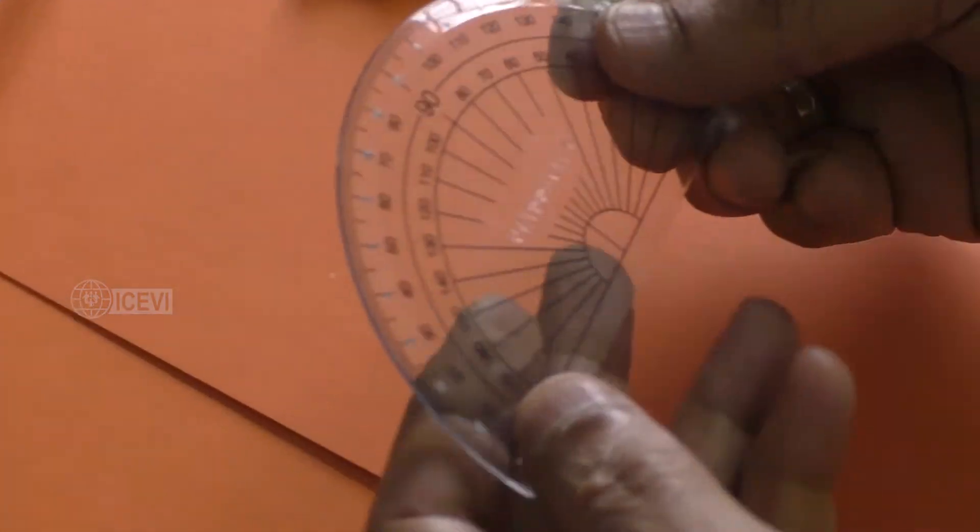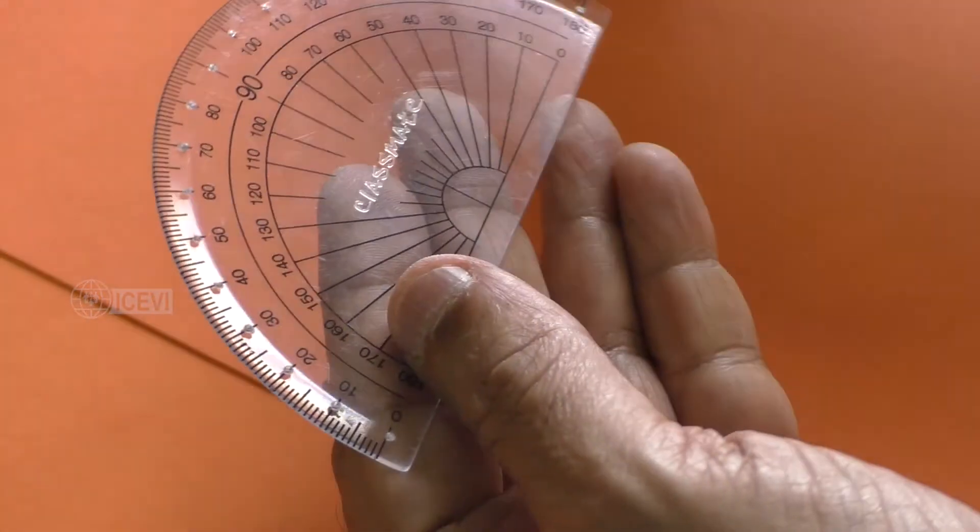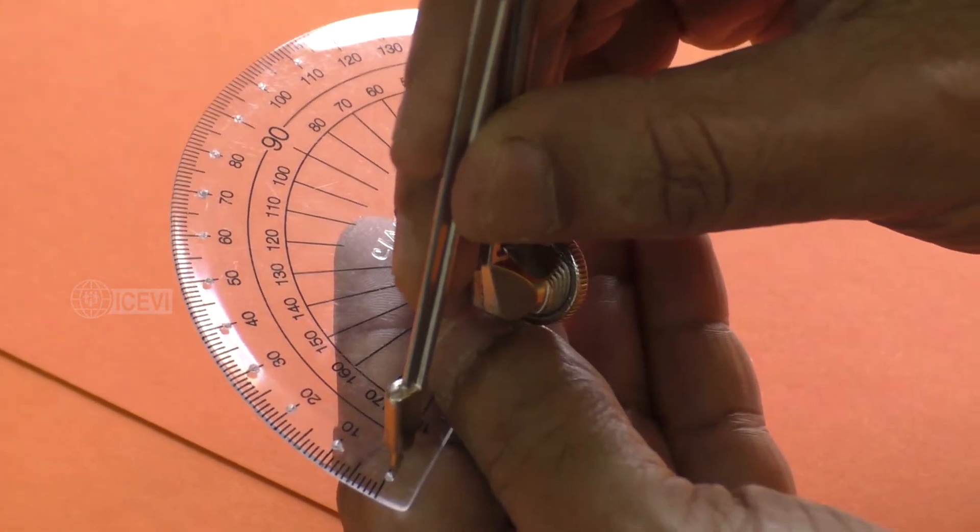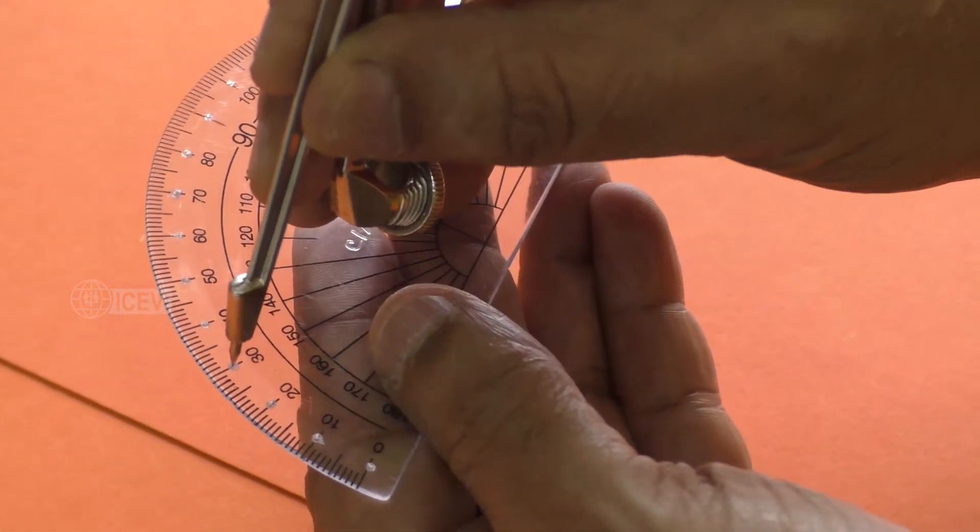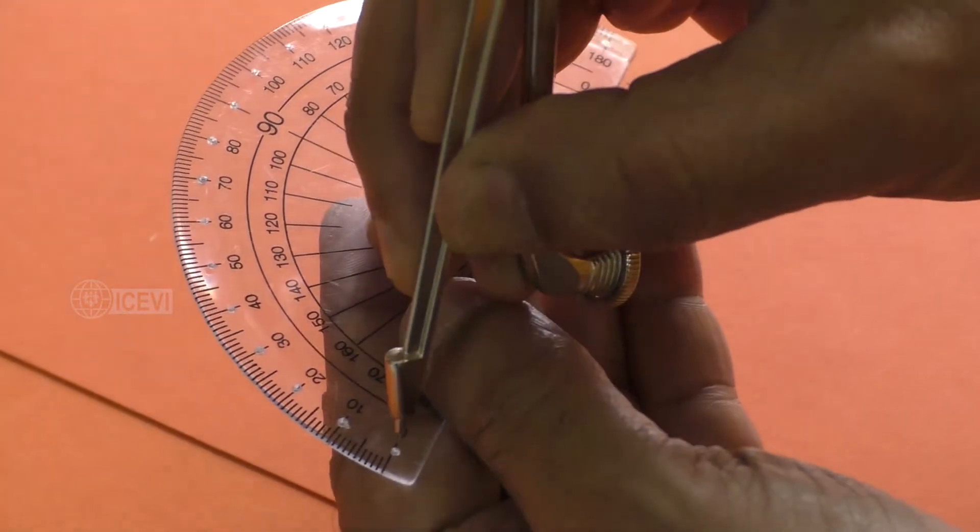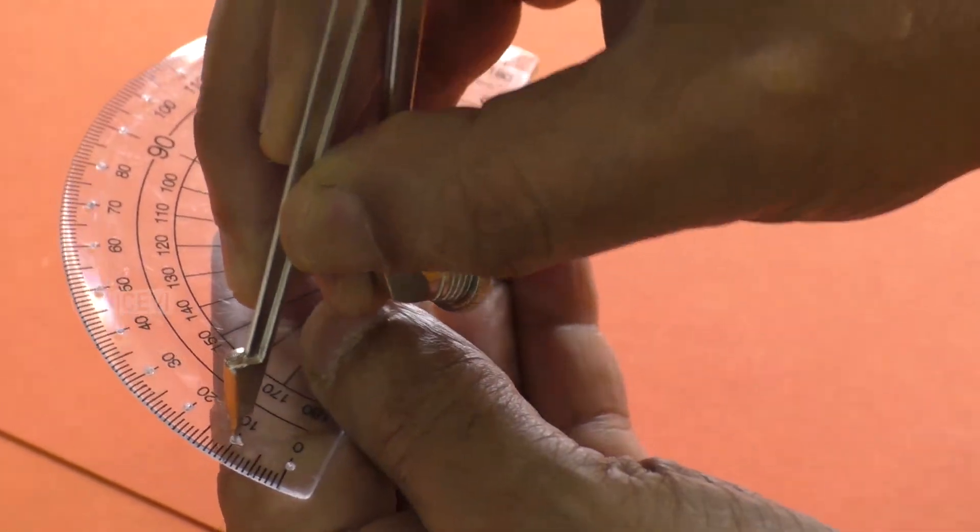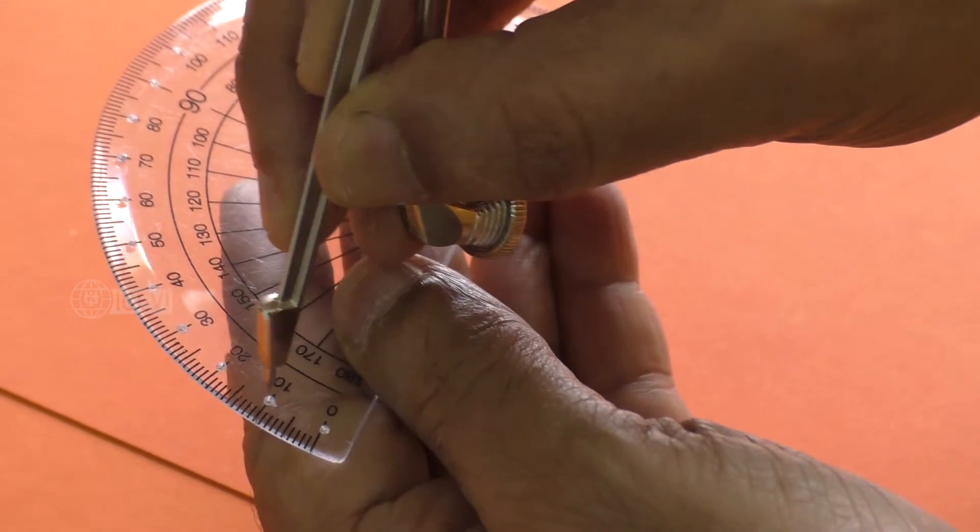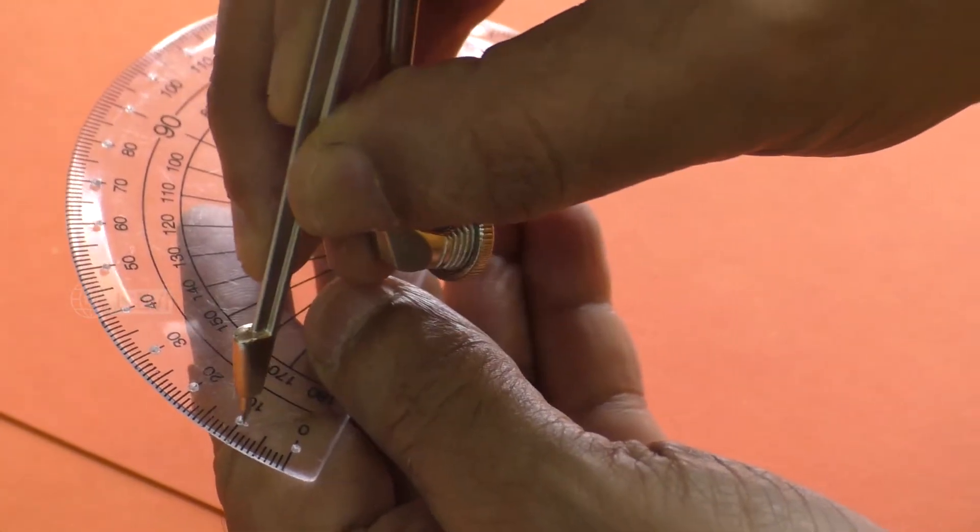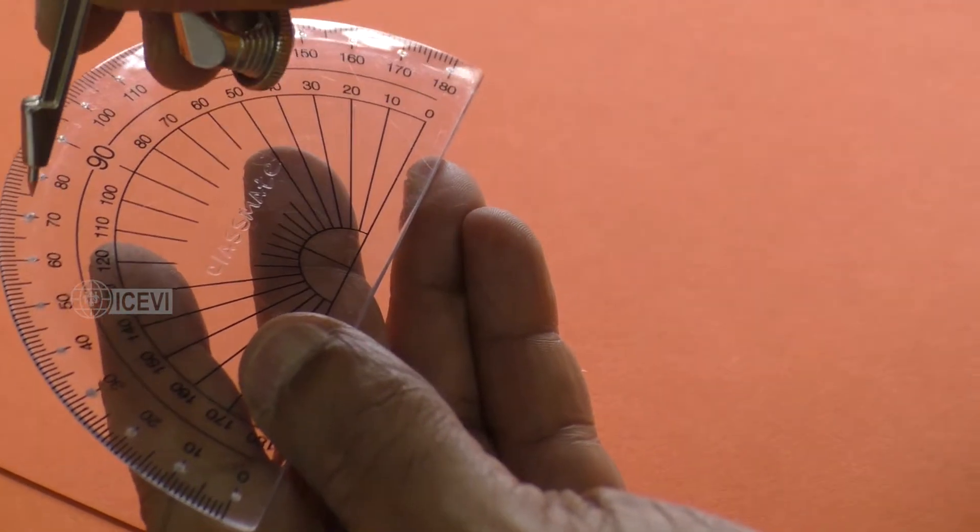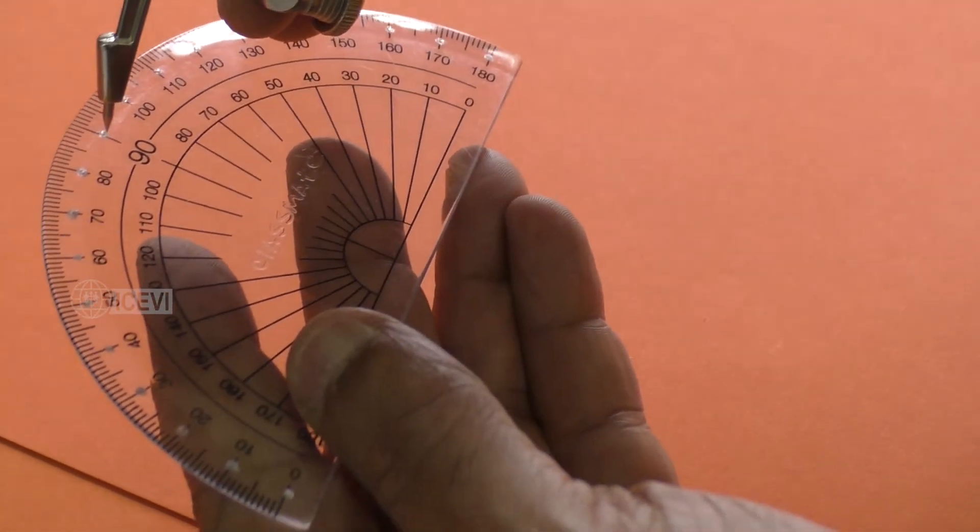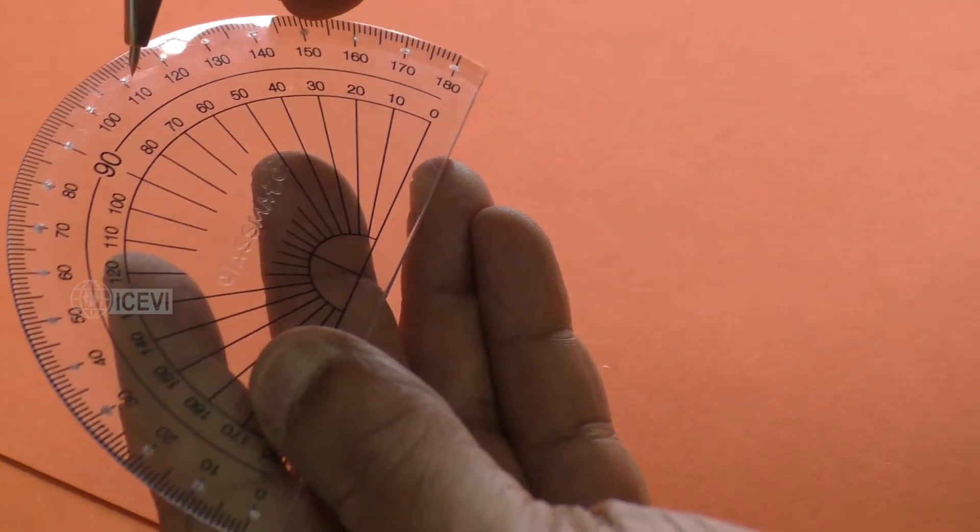For example, take the protractor. Here what we have done is taken every 10th angle, take the needle and then pierce it for every 10th angle: 0, 10, 20, 30, 40, 50, 60, 70, 80, 90, and then 100, it goes on up to 180.